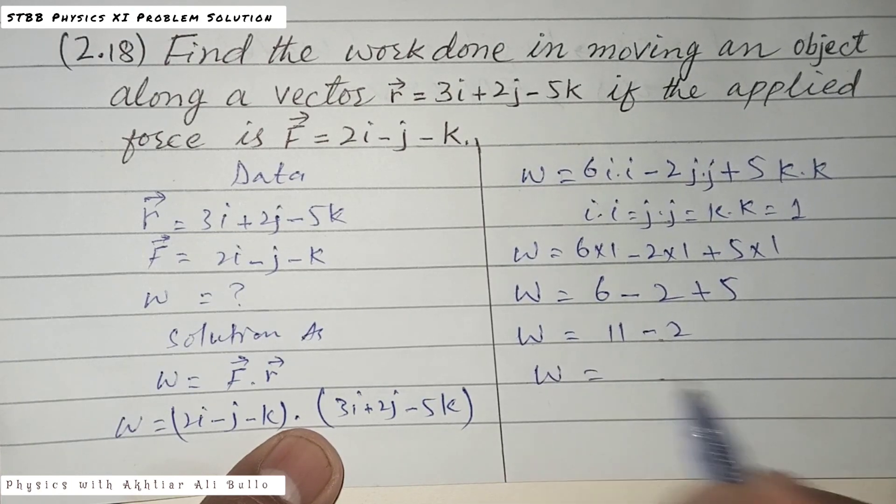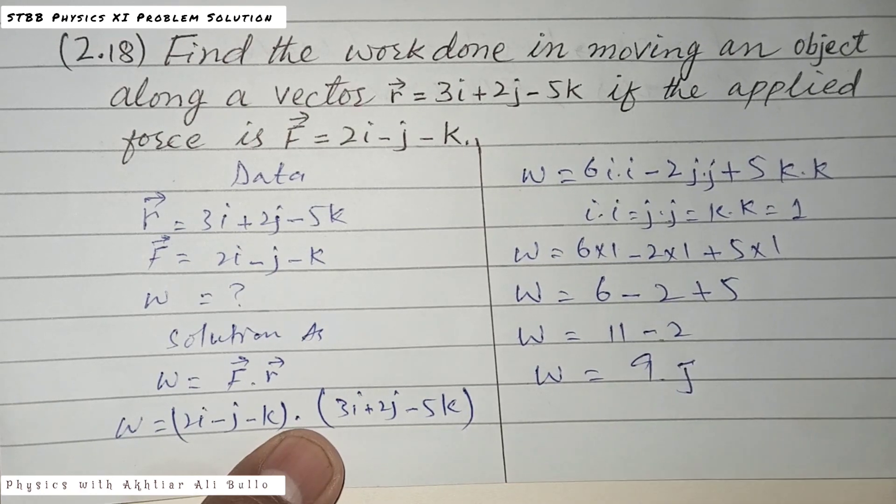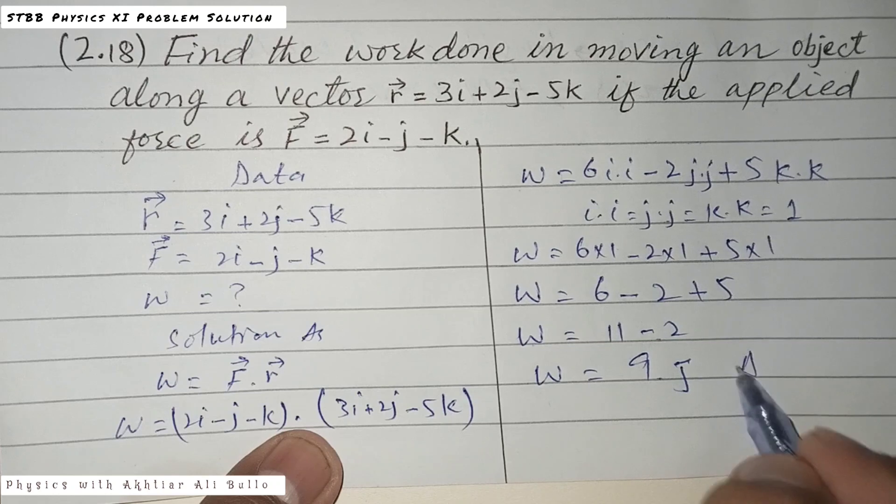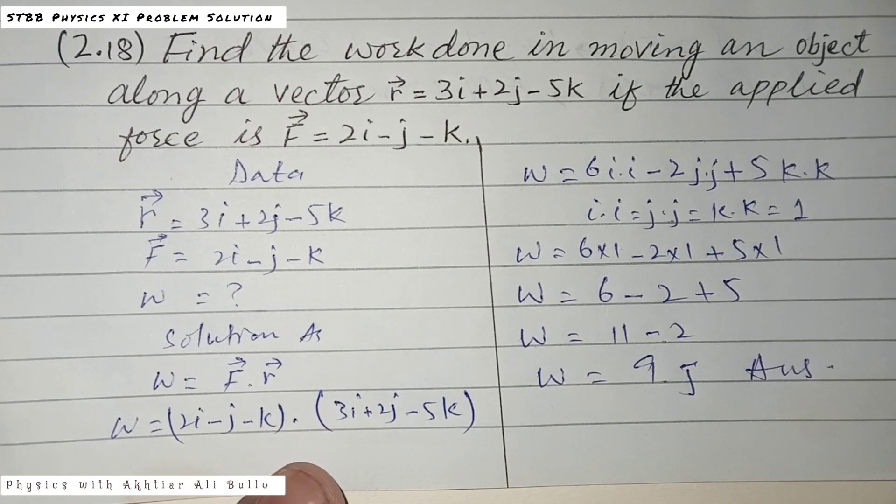Work done equals 11 minus 2, which is 9 joules. This is our required answer: work done is 9 joules.